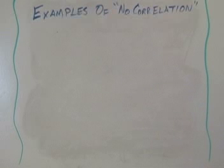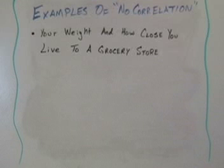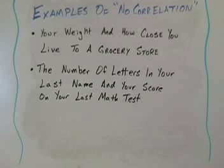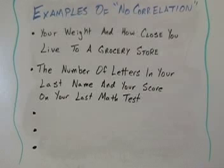Let's look at a couple of examples of relationships that have no correlation. What about how much you weigh and how close you live to a grocery store? This is an example of no correlation — people who live closer to a grocery store don't weigh more than people that live further away. There's no relationship between how close you are to the grocery store and how much you weigh. Another example of no correlation could be the number of letters in your last name and the score you made on your last math test. People with long last names don't do any better or any worse than people with short last names. Can you think of some other examples of relationships with no correlation?